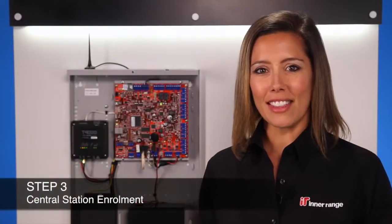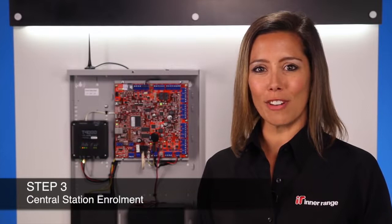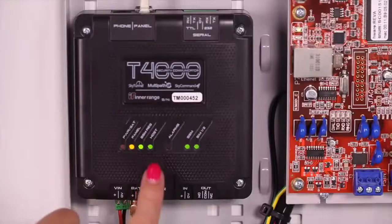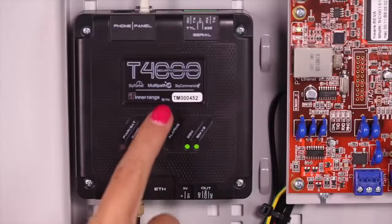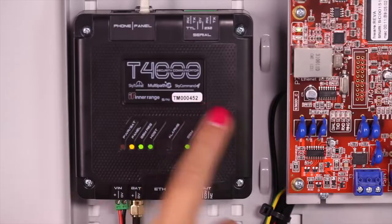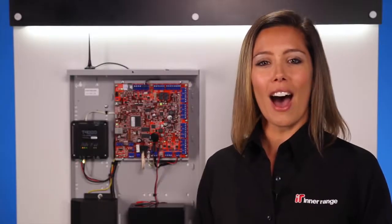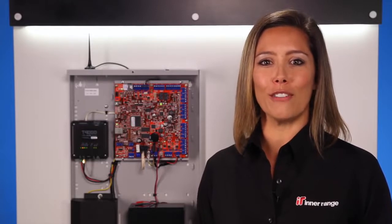Step three: now that the T4000 has connected to the 3G network, the host LED will turn on solid. The T4000 is now ready for enrollment with your central monitoring station. To enroll your T4000, call your monitoring center and quote the T4000's TM serial number to the operator. I will now guide you through the steps that the operator will take to fully enroll your T4000.